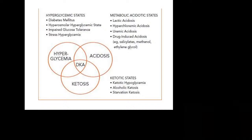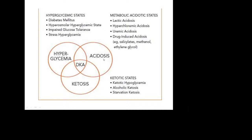If a patient is only having hyperglycemia and coma without acidosis and ketones, we call that hyperosmolar hyperglycemic state and coma — not diabetic ketoacidosis. When the sugar is very high, 500 or 600, but there is no acidosis and no ketones present, we call it hyperosmolar coma.